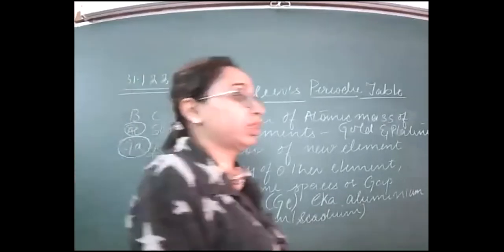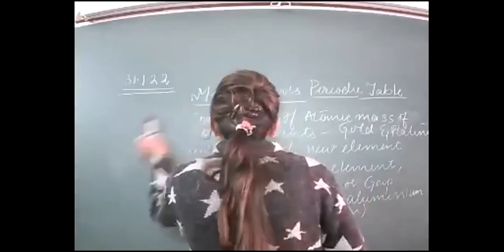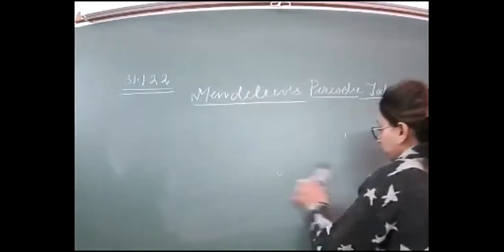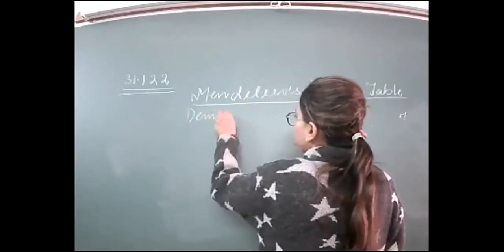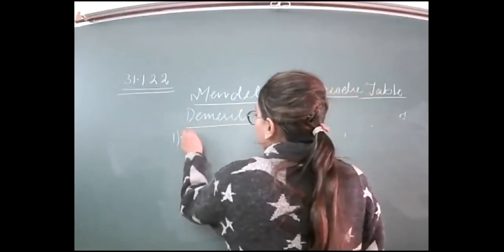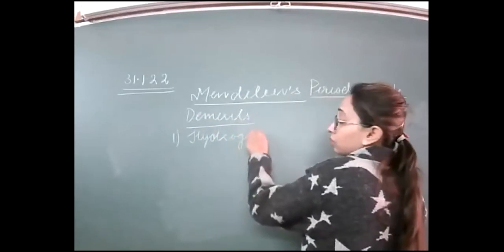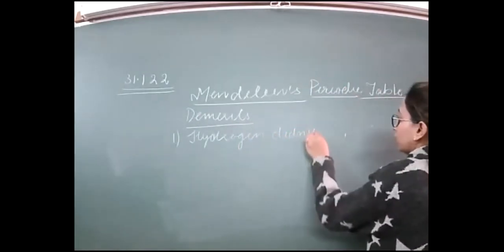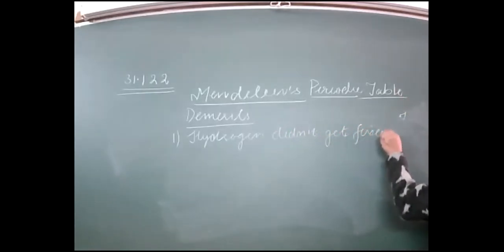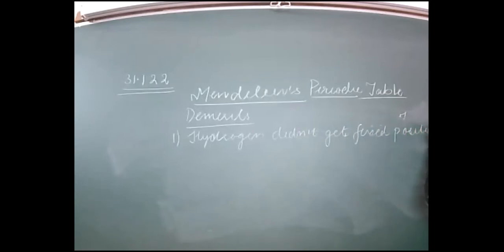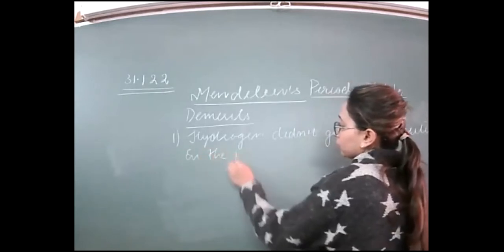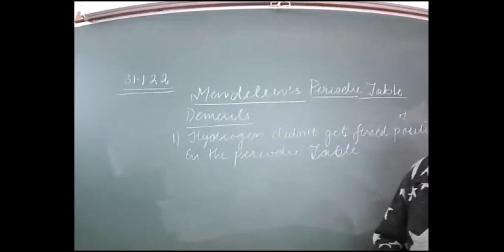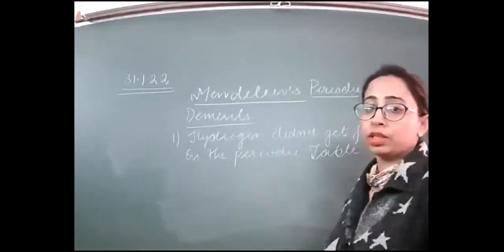One demerit which continues even in the modern periodic table is that hydrogen couldn't be placed properly. The first demerit is that hydrogen didn't get a fixed position in the periodic table. As we know, even in the modern periodic table hydrogen didn't get a definite position.